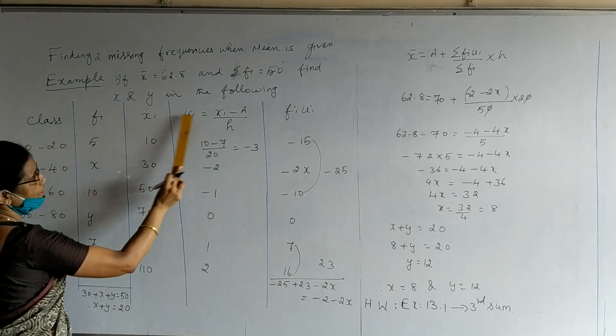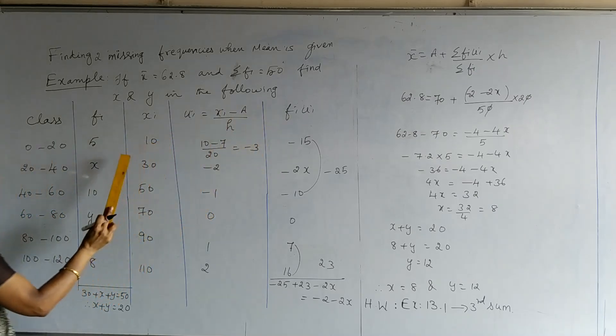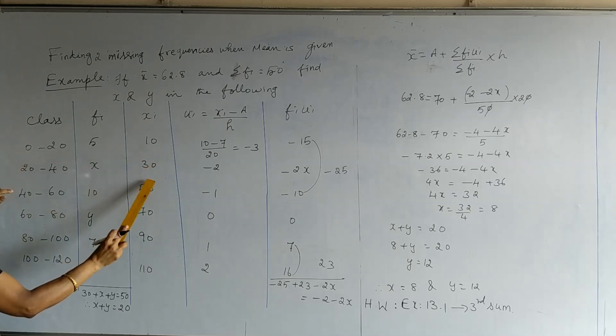As before, the headings are xi, ui, and fi ui. Third column is mid-value, which is the sum of these two numbers divided by 2, which gives 10, followed by 30, 50, 70, 90, and 110.